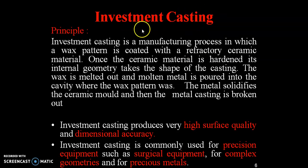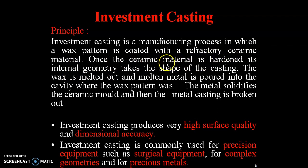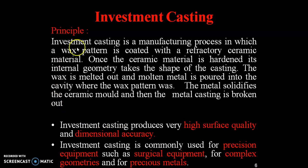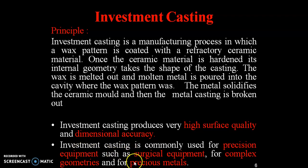Now we are going to see about investment casting. The principle of investment casting is a manufacturing process in which a wax pattern is coated with a refractory ceramic material. Once the ceramic material is hardened, its internal geometry takes the shape of the casting. The wax is melted out and molten metal is poured into the cavity where the wax pattern was. The metal solidifies within the ceramic mould and then the metal casting is broken out. Investment casting produces very high surface quality and dimensional accuracy, and is commonly used for precision equipment such as surgical equipment, complex geometries, and precious materials.